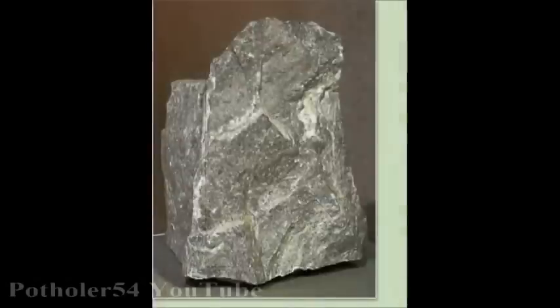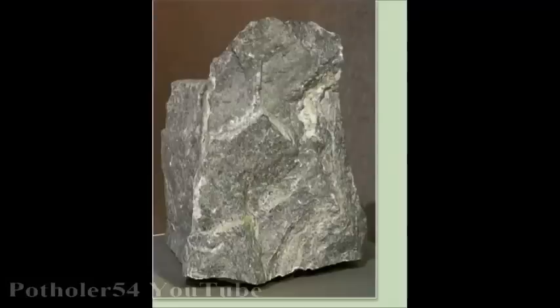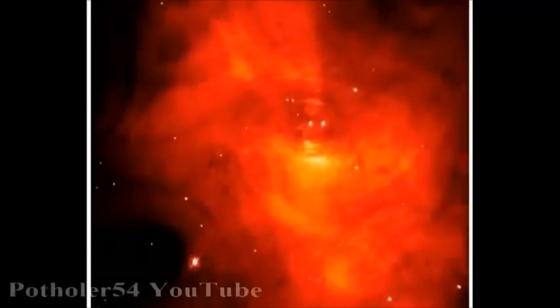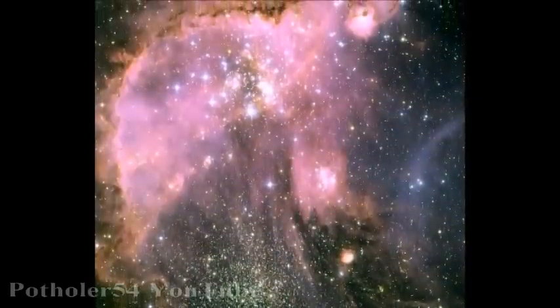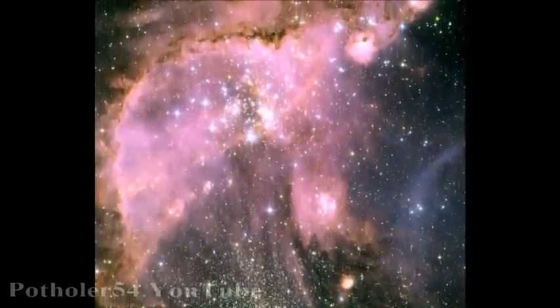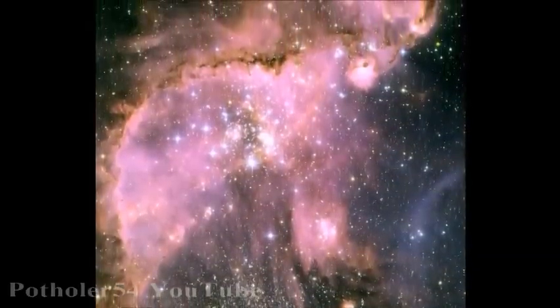Radiometric dating takes us back to the oldest rocks we've found on Earth, 3.8 billion years old. If you want to go back even further, you have to look into space. My video, The History of the Universe Made Easy, explains how we can calculate the age of stars and galaxies, so I won't repeat that here. Just take a look at the video.